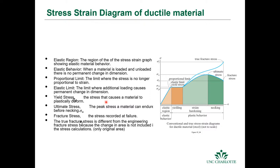This is our classical stress-strain diagram. In the elastic region, governed by Hooke's law, if we apply a stress below the proportional limit then stress is proportional to strain. If we remove the load we go all the way back down to zero. This is where Hooke's law is valid and where we get elastic behavior.